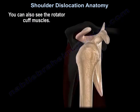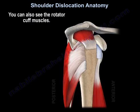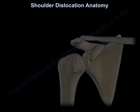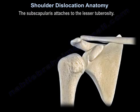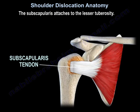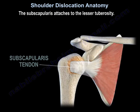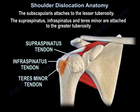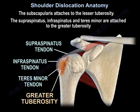You can also see the cuff muscles. The subscapularis is attached to the lesser tuberosity. The supraspinatus, infraspinatus, and teres minor are attached to the greater tuberosity.